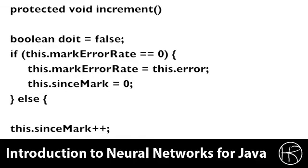First, we create a local variable called doit. If doit gets set to true, then that means that we have found a better neural network solution by increasing the hidden neuron count. Here we look at the mark error rate. The mark error rate is the last error rate that we encountered when we switched something. So if it's zero, that means that we have not yet sampled the error rate.